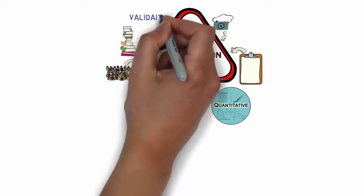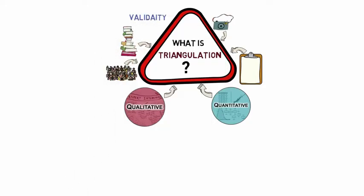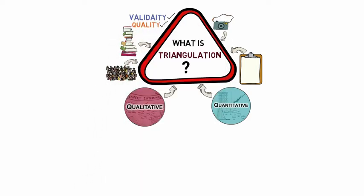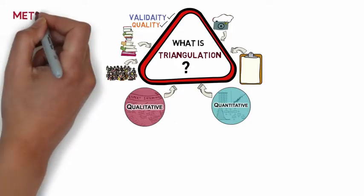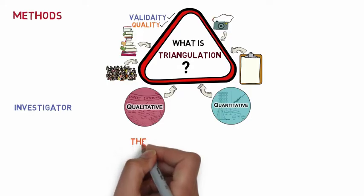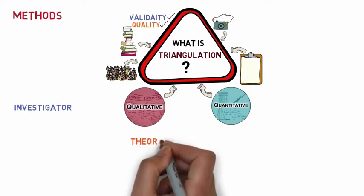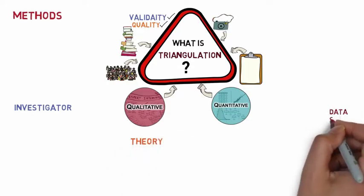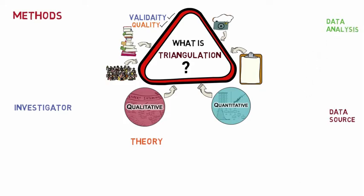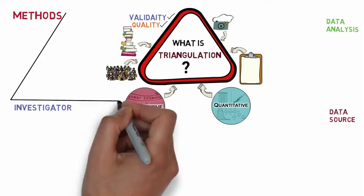So why do we use triangulation? Because it is used to increase the validity or ensures the quality of your study. Now I will explain the different types of triangulation: methods triangulation, investigator triangulation, theory triangulation, data source triangulation, and data analysis triangulation.